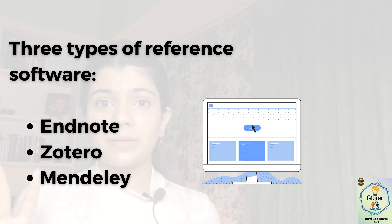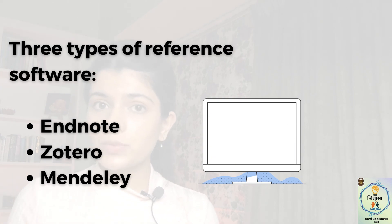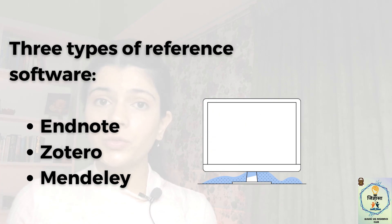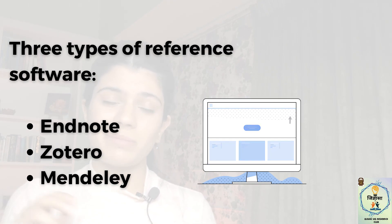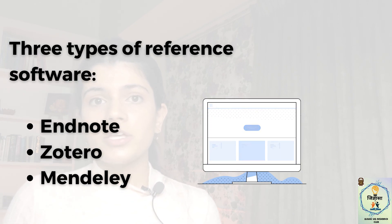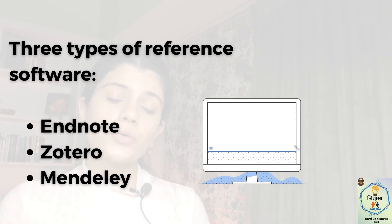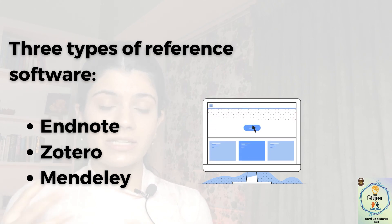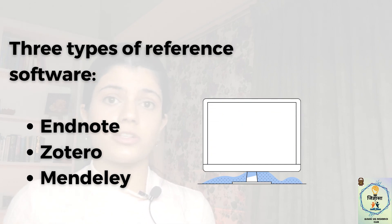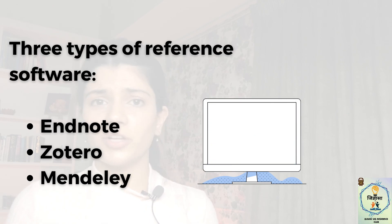There are three types I'm going to mention today: the first is EndNote, the second is Zotero, and the third is Mendeley. EndNote is actually paid, but Zotero and Mendeley are free. To give you a better understanding of how these softwares work, I'm going to explain one in great detail — Zotero. I've given you a short tutorial on how to use it; you can follow along or watch and follow the steps later.